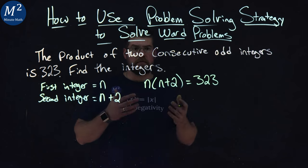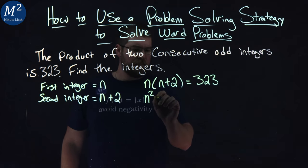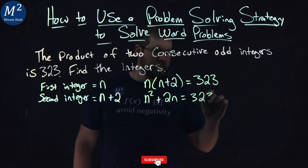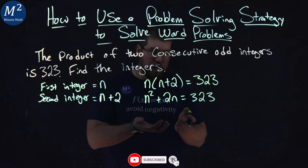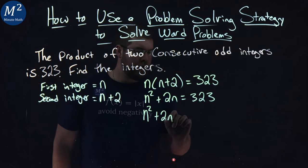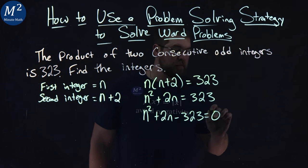Now from here we want to solve this. Well, n times n is n squared, plus n times 2 is 2n, equals 323. If I subtract the 323 to both sides, I have n squared plus 2n minus 323, and that equals 0.